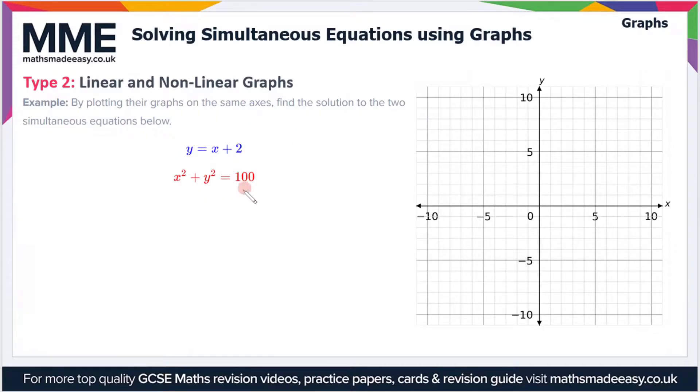You might recognize this as a circle equation. Circles have the equation or the general form x² + y² = r². So in this case, r² = 100, so r, the radius of the circle, is 10.